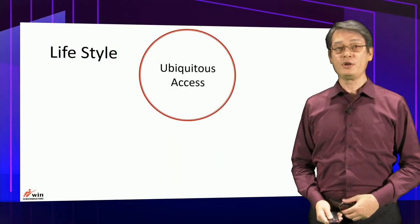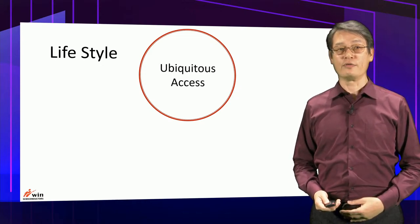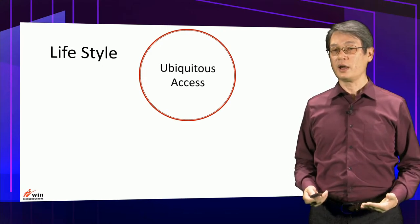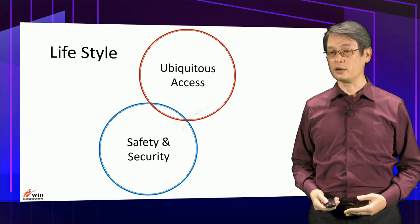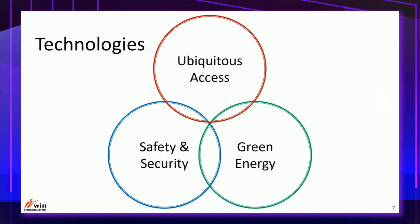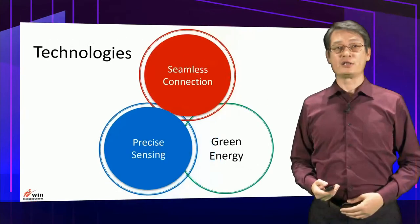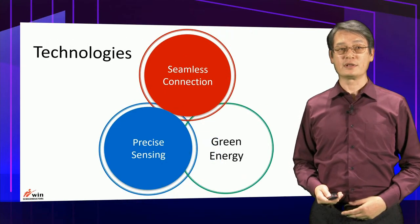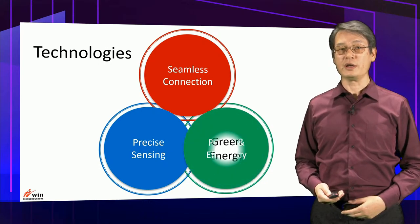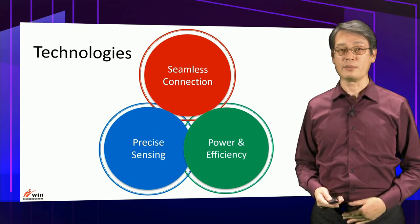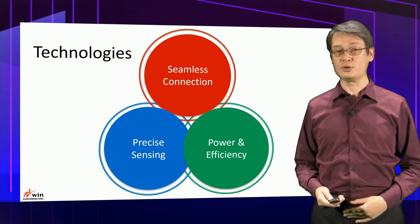From the video, we see that ubiquitous access to the internet has become a lifestyle. We expect to live in a safer, more secure life with environmentally friendly green energies. These lifestyle needs translate into enabling technologies which must be able to provide seamless connectivity, smart sensing devices to keep our life safe and secure, and power-efficient devices to be environmentally friendly.